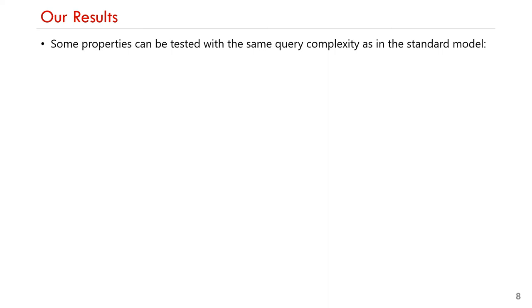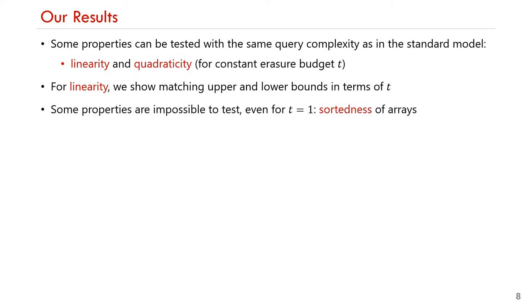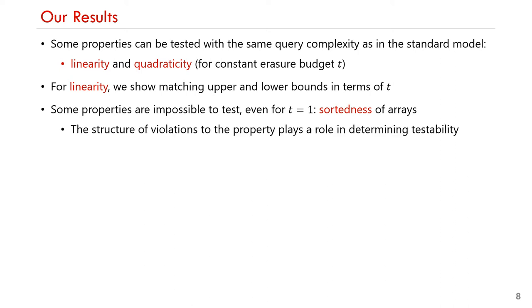These are our results at a high level. We show that some properties can be tested with the same query complexity in the online erasures model as in the standard model, namely linearity and quadraticity, comparing query complexity for a constant erasure budget t. For linearity, we show matching upper and lower bounds in terms of the erasure budget t. On the other hand, we show that some properties are impossible to test in our model even when t equals 1, namely sortedness of arrays. The structure of the violation to the property plays an important role in determining testability.